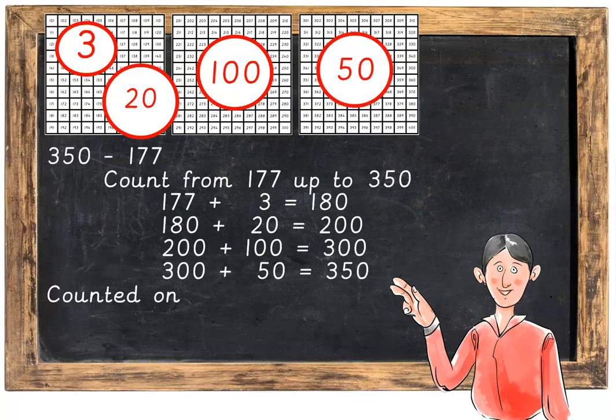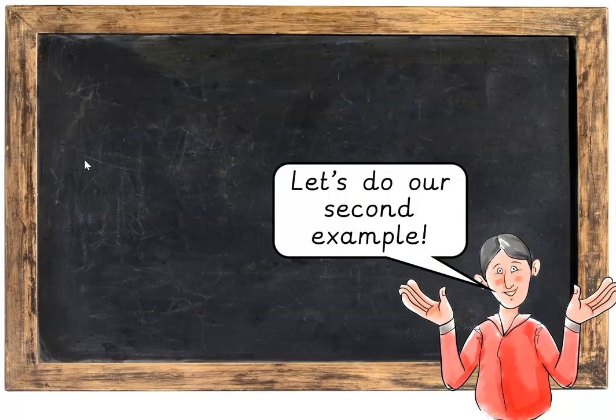Now we're going to find out how much we've counted on all together. We've jumped 3 plus 20 is 23, plus 100 is 123, and then plus 50 is 173. So 350 take away 177 equals 173. That's the final answer. Great job.